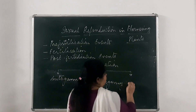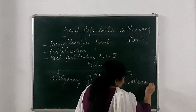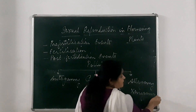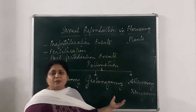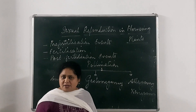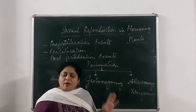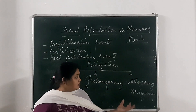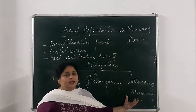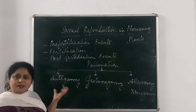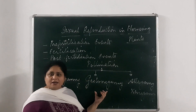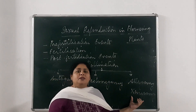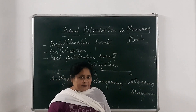The third type is allogamy, also known as xenogamy. Xenogamy or allogamy means pure cross-pollination, in which the pollen grains of one flower are transferred to the flower of another plant — that means this process occurs between two different plants. To summarize: autogamy occurs in a single flower, geitonogamy occurs between two flowers of the same plant, and xenogamy occurs between two flowers of two different plants.